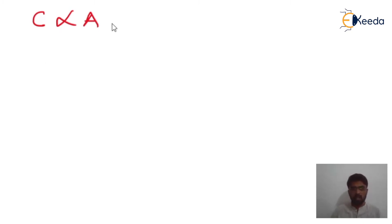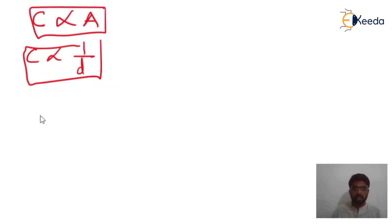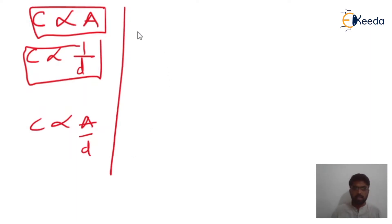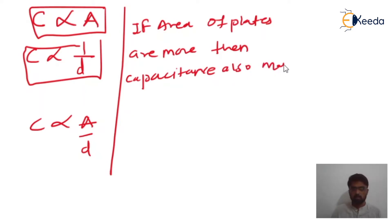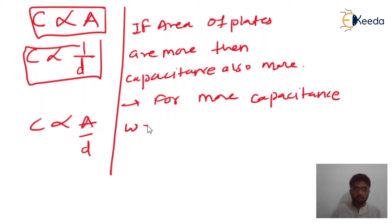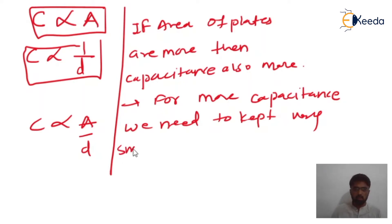Capacitance is directly proportional to the area of the plates and inversely proportional to the distance between the two plates. So we can write: C ∝ Area / Distance. This means that if the area of the plates is more, the capacitance is also more. And for more capacitance, we need to keep a very small distance between the two plates.